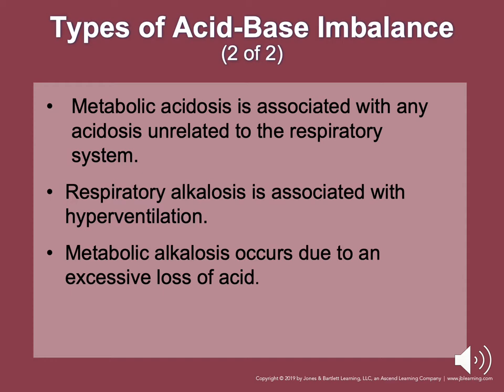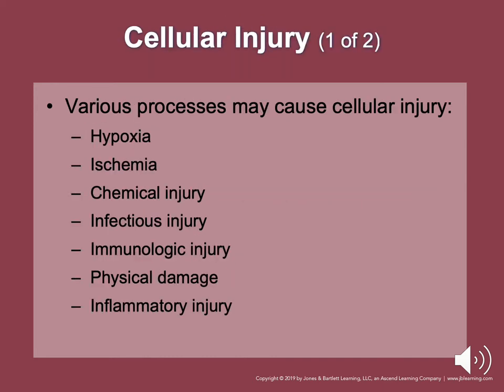Cell injury may have several causes. These include hypoxia and ischemia with cardiac or respiratory patients, chemical injury, infectious injuries especially with septic patients, neurological injuries, physical damage, and inflammatory injury such as from a sports-related injury or some type of blunt or penetrating trauma.